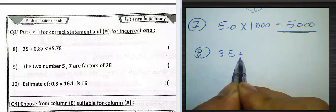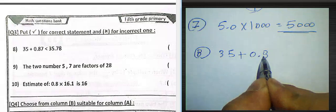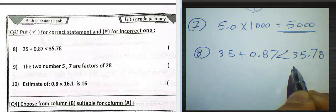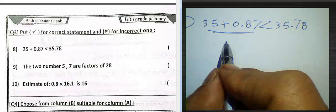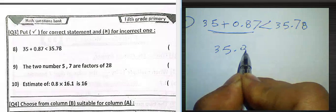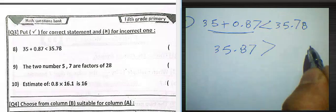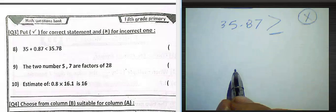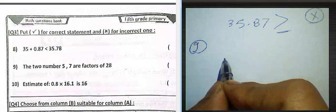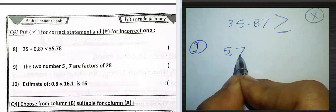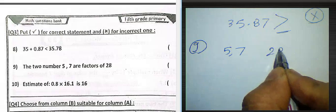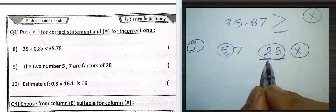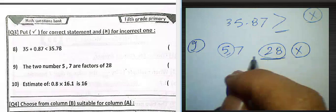35 plus 0.87 is then 65.78 or not? We can find the result here, it will be 35.87, which is greater than, so it's false. We must change the sign here. Question number nine: the two numbers 5, 7 are factors of 28. No, it's false, because 28 can't be divided by 5. 28 can be divided by 7 only, but can't be divided by 5, so it's false.